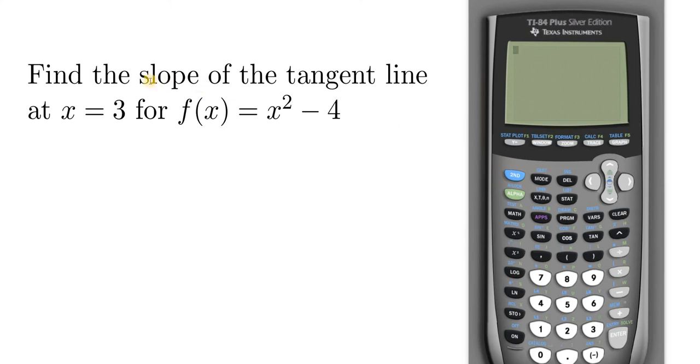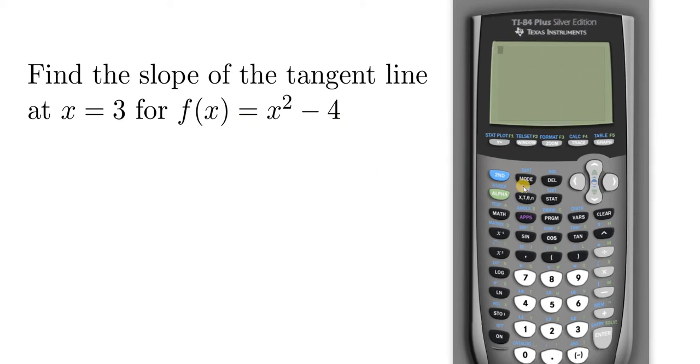Hi everyone, in this video I'm going to show you how to find the slope of the tangent line to the graph of a function at a specific number. We're going to find the slope of the tangent line at x equals 3 for the function f(x) = x² - 4. There are two ways to do this.